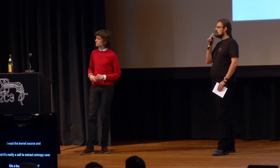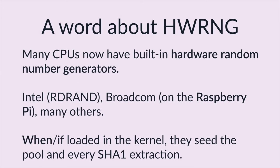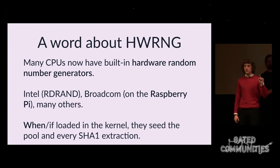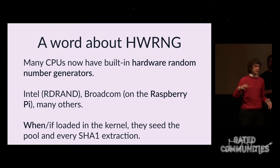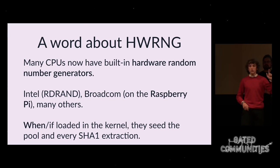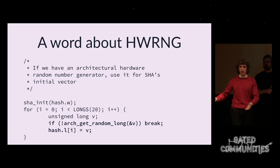Next question: what do you think about hardware entropy generators? Some CPUs and platforms have real hardware random number generators that read electrical noise to give actual randomness. Linux has support for them — if they're loaded, they'll immediately be used to refill the pool and will also be used as initialization vectors for the SHA-1 extraction. If they're turned on, you don't have to worry about them; they'll just make /dev/urandom work even better.